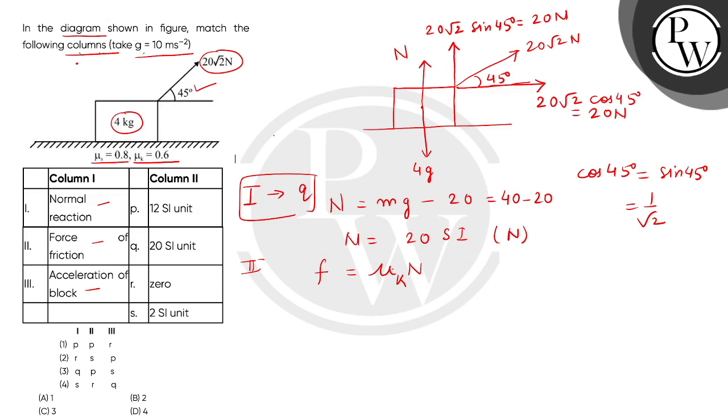We can see the coefficient of kinetic friction is 0.6 and normal reaction is 20. So this will be 12 newton. Force of friction is entry number P, so the second answer will be P.